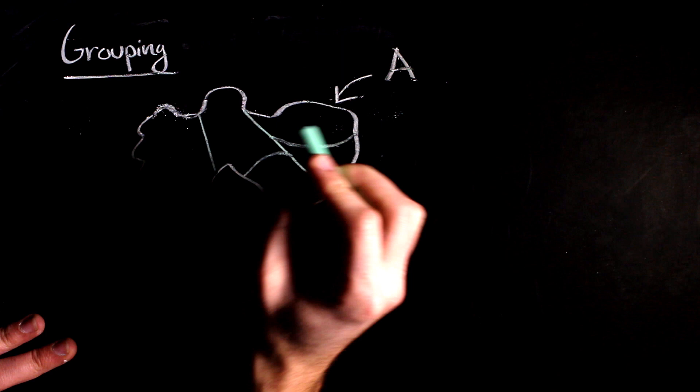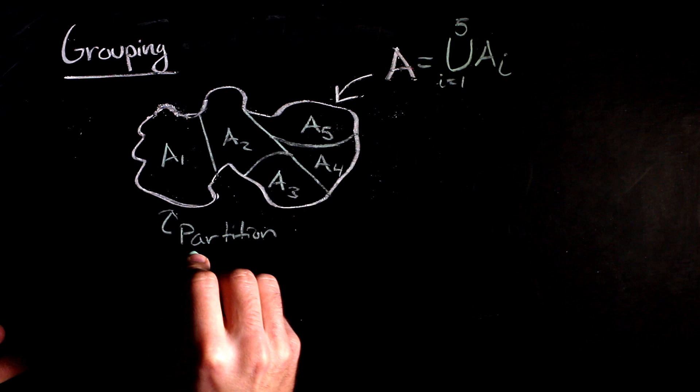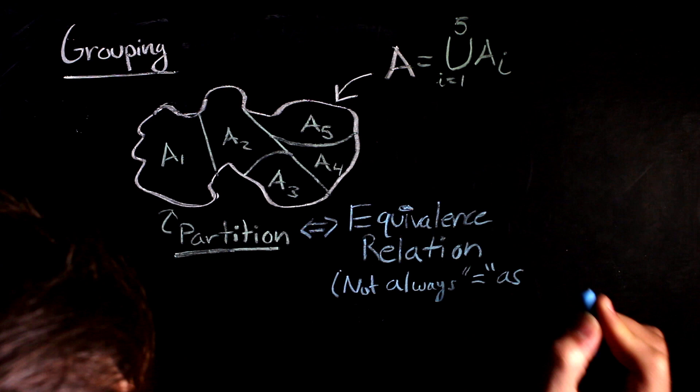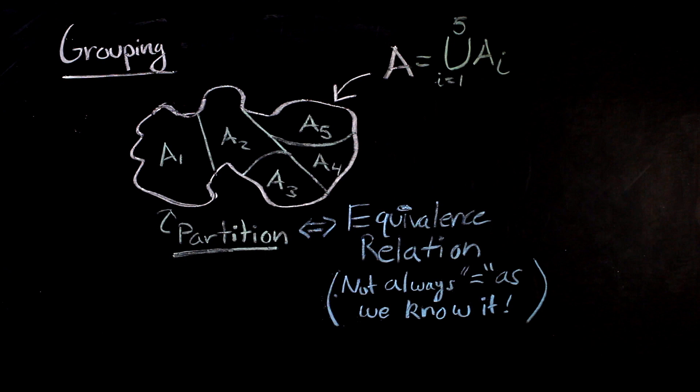We'll start with groupings first. We can put things into at most one group and break our set into smaller non-intersecting sets. This is called a partition, and it induces what is called an equivalence relation. We're not going to go through all the properties of an equivalence relation in this video, but just to stretch the mind a bit before we move on, notice that the equality of an equivalence relation does not have to be the identity equality that we are all used to.